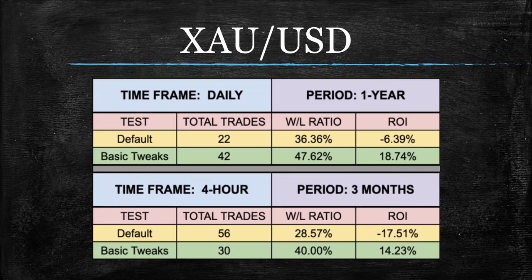Moving over to gold — strong. We've seen stronger obviously. This is one of those situations where you can get some really good ROI even though you have a sub-50% win-loss ratio. We've also seen over 50% win-loss ratios in gold, but this certainly isn't bad. I wouldn't be mad with a healthy 42 trades and a healthy 18 and three-quarters percent ROI. For all you gold and silver traders out there, I would absolutely test this out in your system.